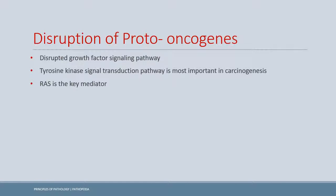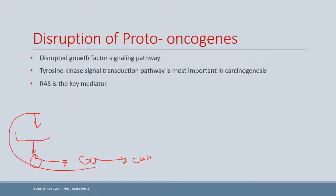Before discussing examples of disrupted proto-oncogenes, let's cover how they normally signal during non-neoplastic proliferation. During normal physiological cell growth, a growth factor comes to a receptor, the receptor activates a molecule next to it, that molecule activates other molecules, and they ultimately lead to cell growth. It is disruption of this whole pathway that causes problems leading to tumor formation.